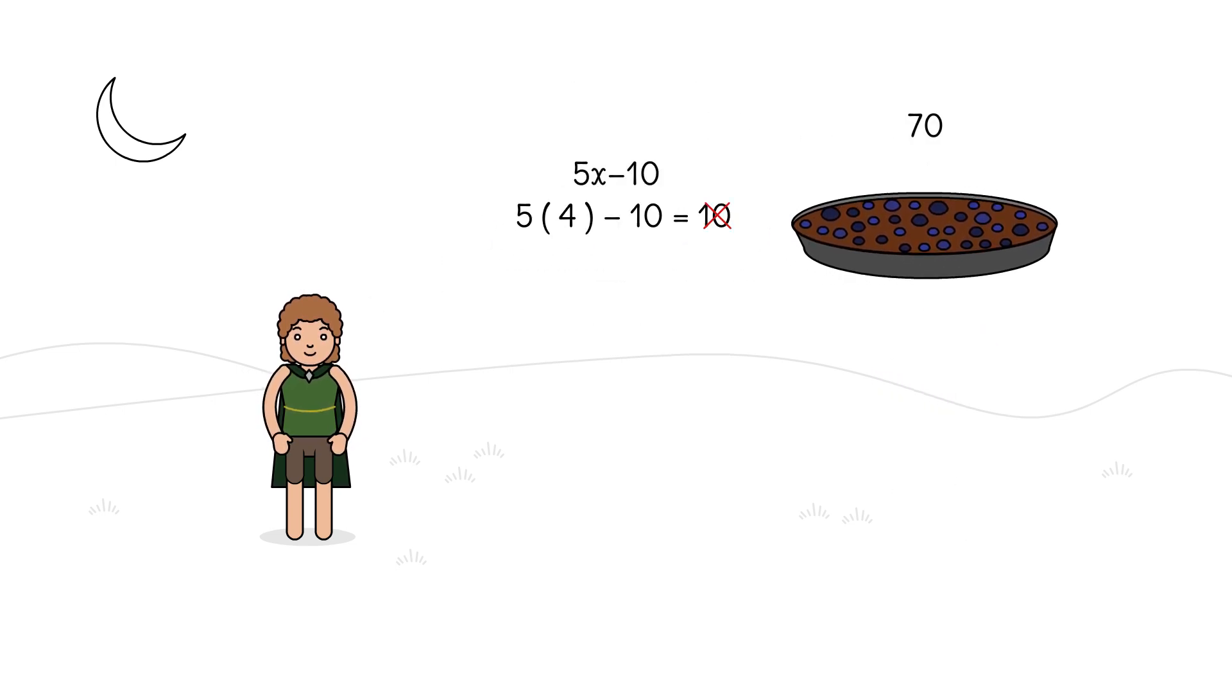He guesses and evaluates a couple x values, but why do that? Instead, he can answer his question by creating the equation 5x minus 10 equals 70.